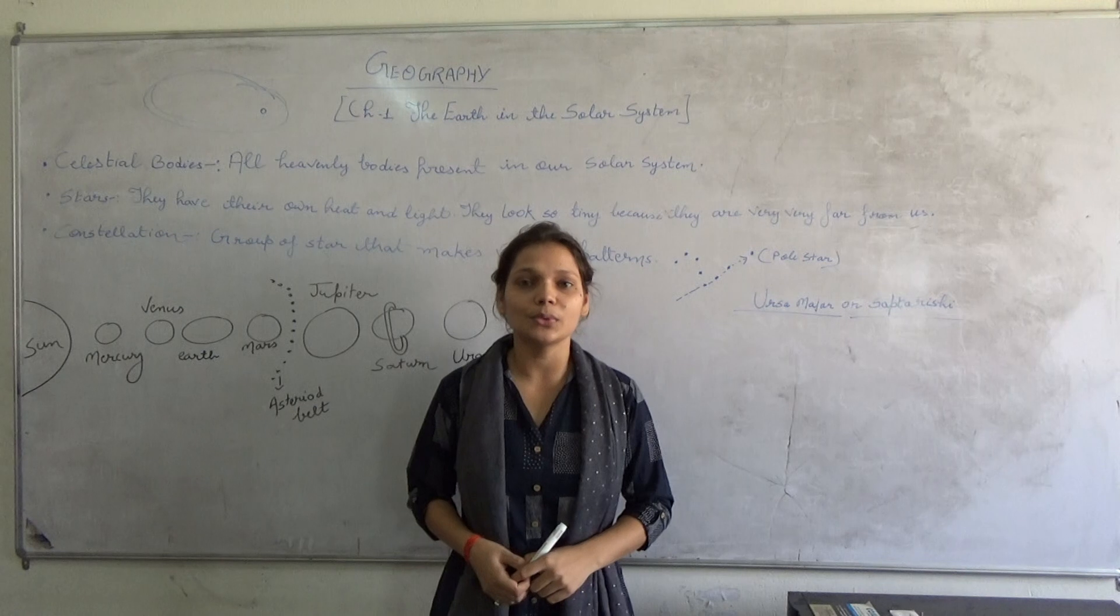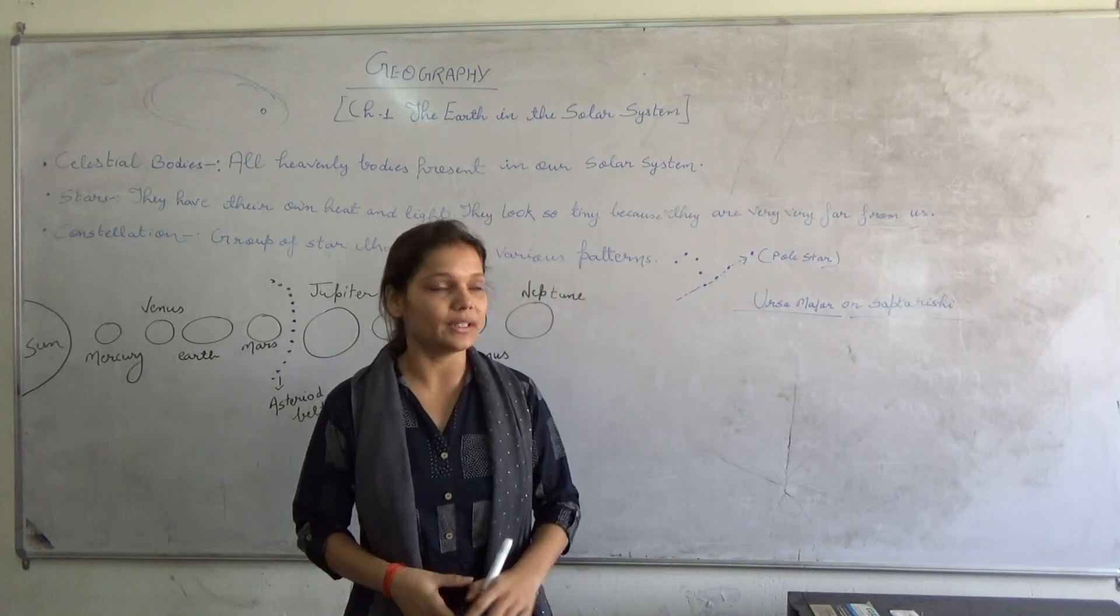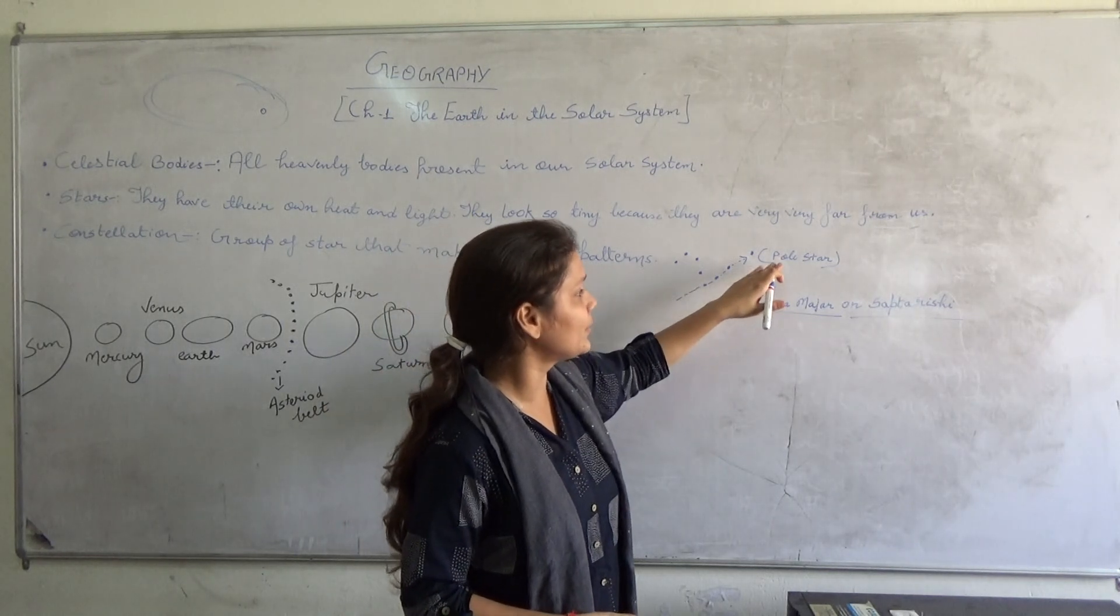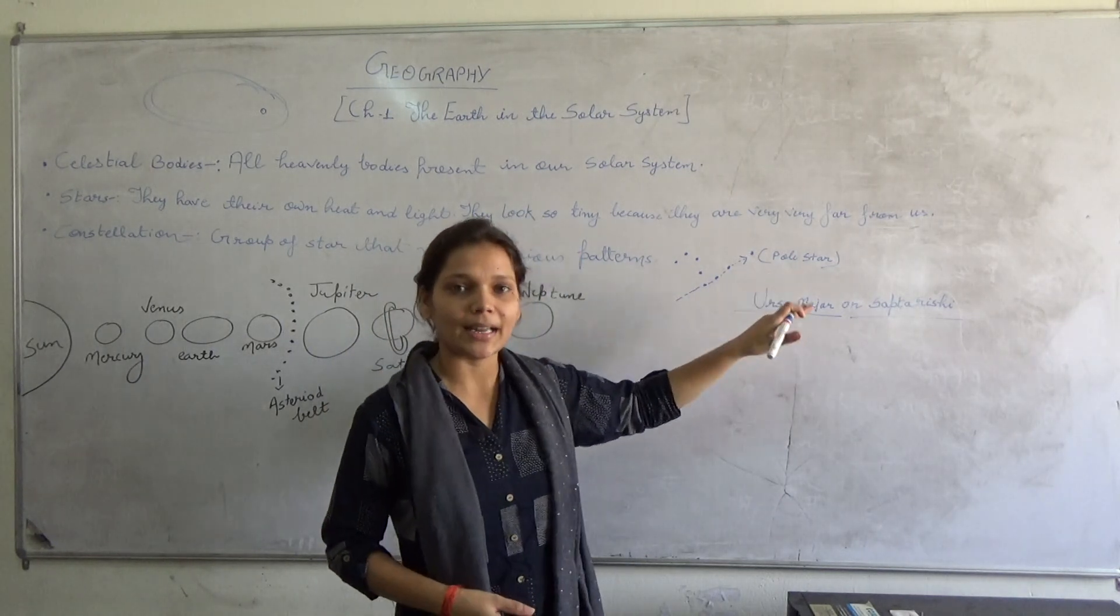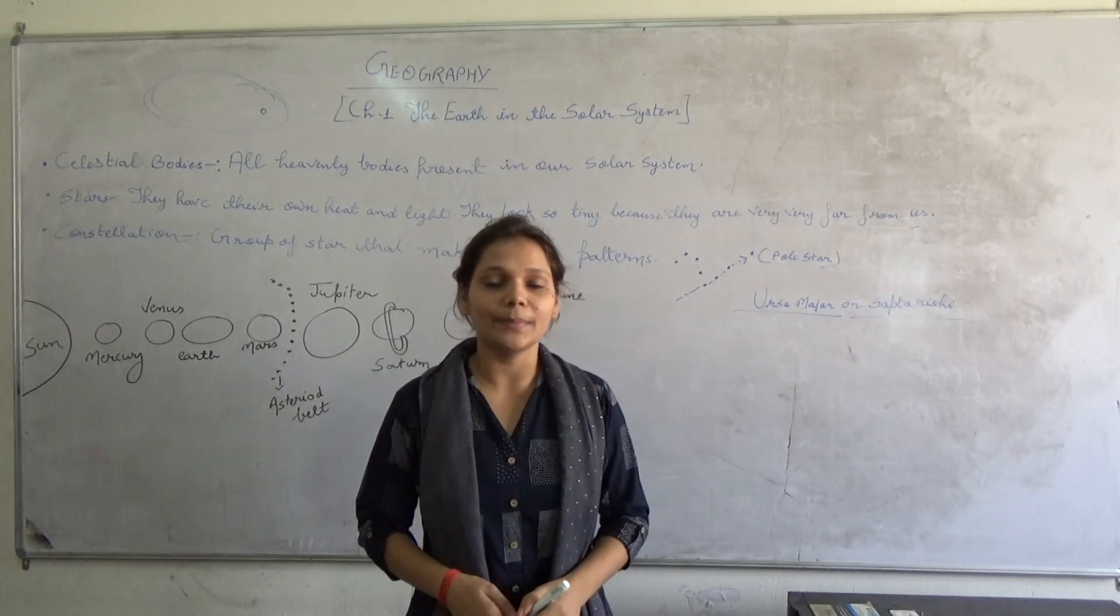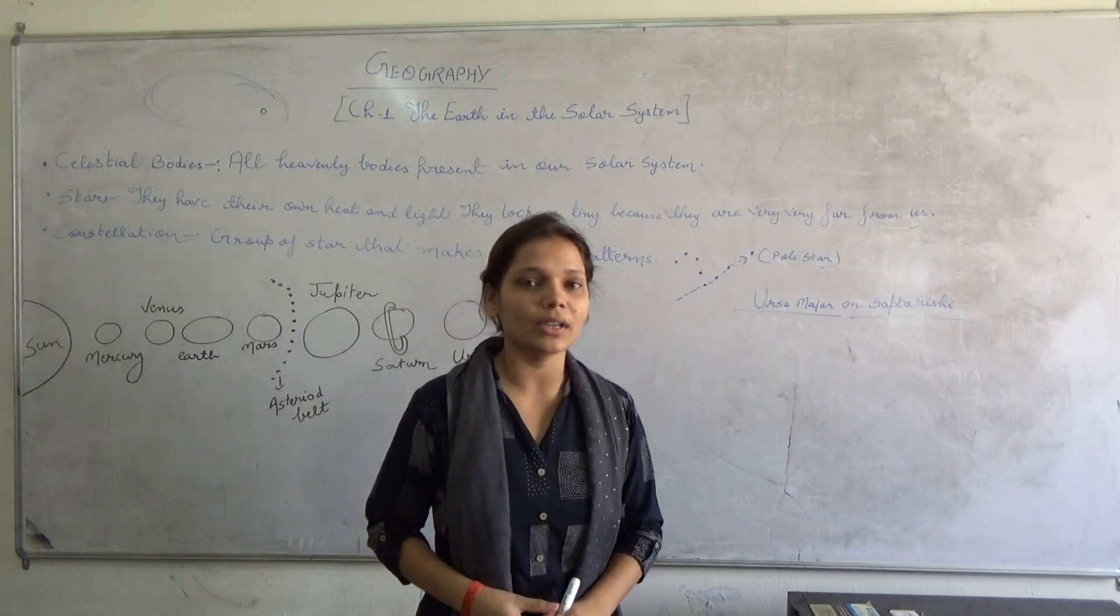In ancient time, people used to determine the direction with the help of these stars. For them, the North Star will show the north direction. The pole star or the Dhruvatara help them the most because it always remains in the same direction.